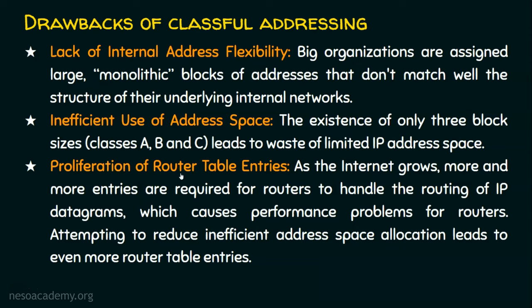The third drawback is proliferation of routing table entries. A router stores the routing table, which is needed to forward packets. As the internet grows, more entries are required for routers to handle routing of IP datagrams, causing performance problems. A router has limited memory, and attempting to reduce inefficient address space allocation leads to even more routing table entries. So classful addressing has this drawback too.